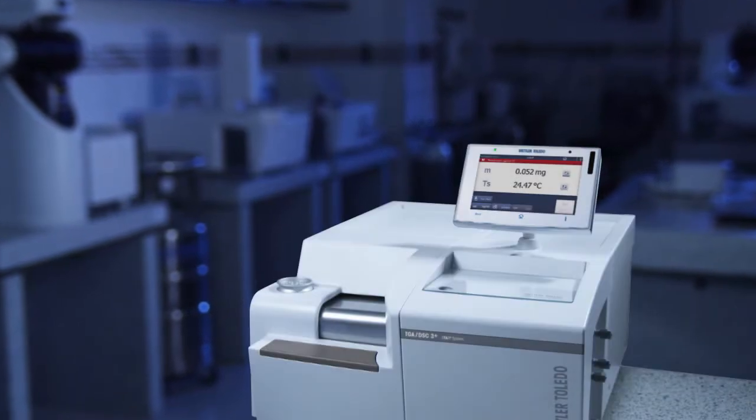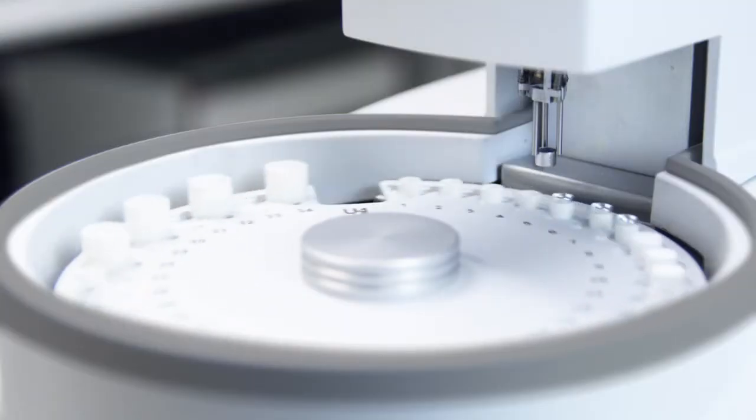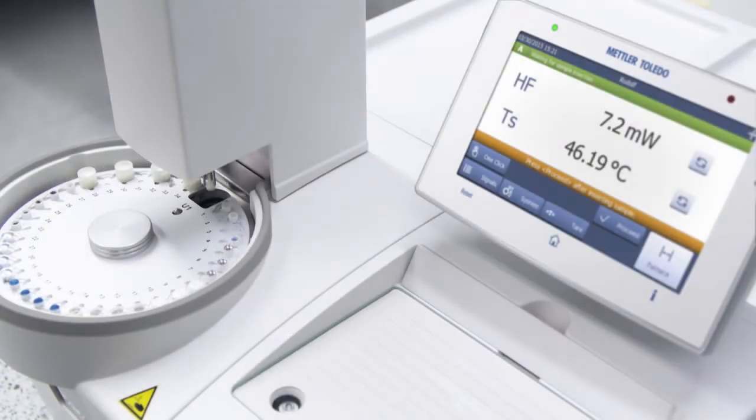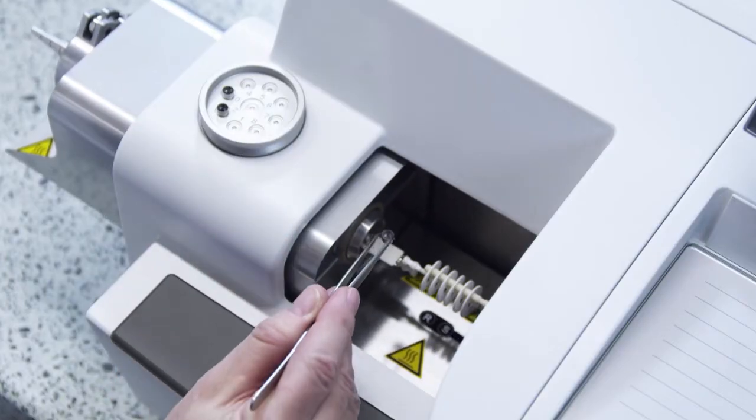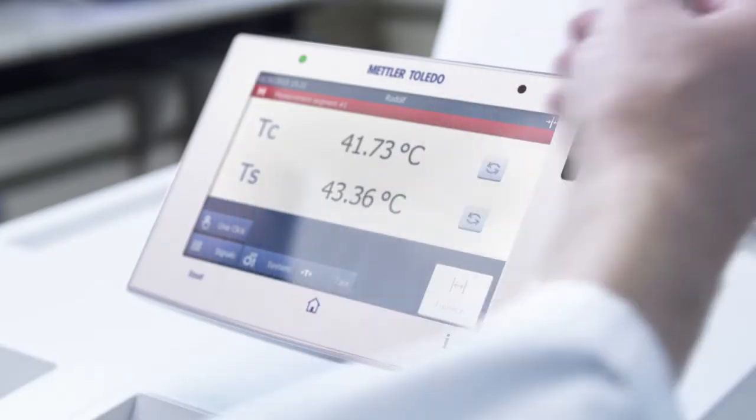The different TGA DSC models can be automated using a sample robot. It operates reliably and safely 24 hours a day, seven days a week. The ergonomic design of the instrument and features such as SmartSense guarantee ease of use and operation free from mechanical disturbances.